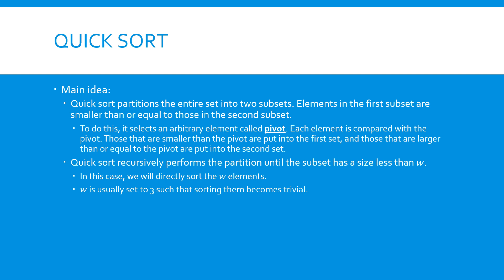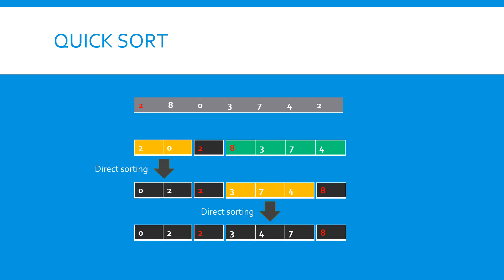Even brute force sorting can be completed quickly. The parameter w is usually set to a small number, such as 3. Here is a toy example. In the first row, we have a list of input elements: 2, 8, 0, 3, 7, 4, and 2.